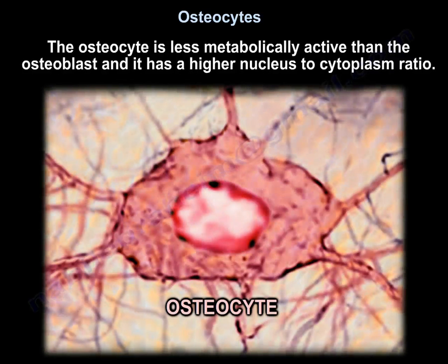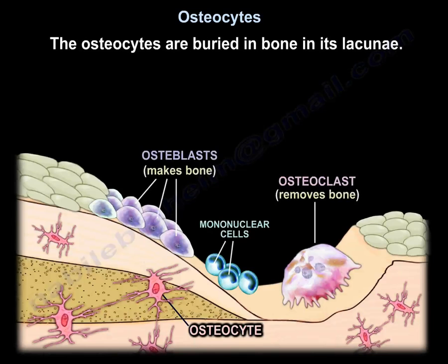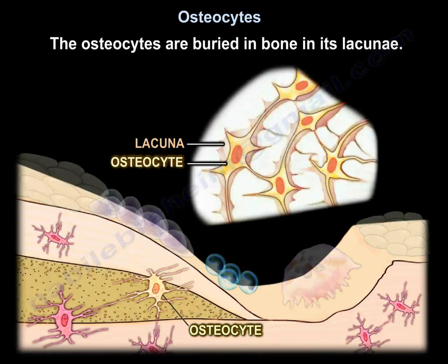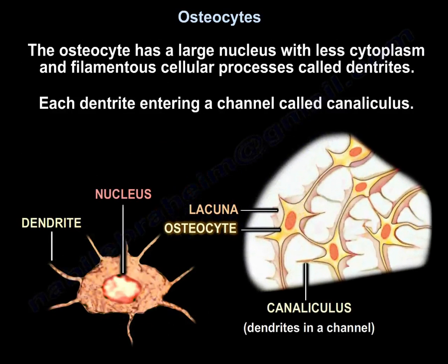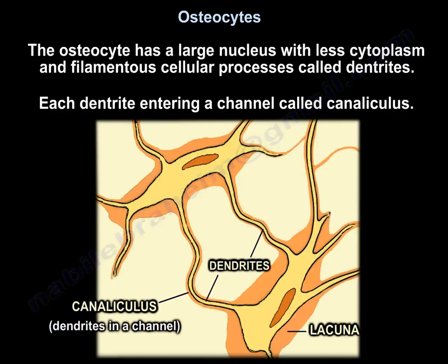The osteocyte is less metabolically active than the osteoblast, and has a higher nucleus-to-cytoplasm ratio. Osteocytes are buried in bone within their lacuna. They have a large nucleus with less cytoplasm, and filamentous cellular processes called dendrites, with each dendrite entering a channel called a canaliculus.